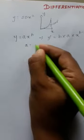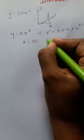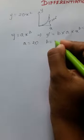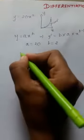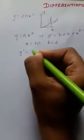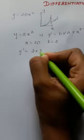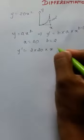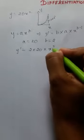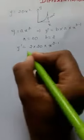My a would be 20 and my b would be 2. So my y dash equals 2 into 20 into x to the power 2 minus 1. So what I get is 40x.